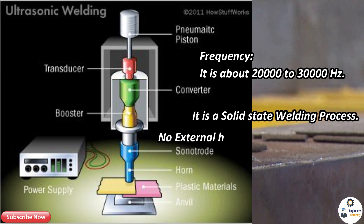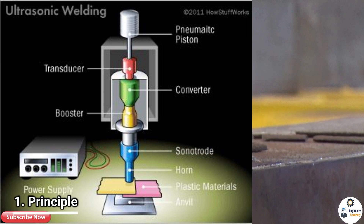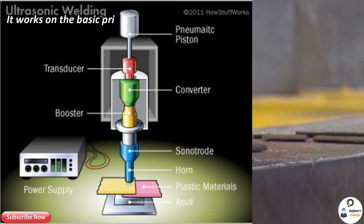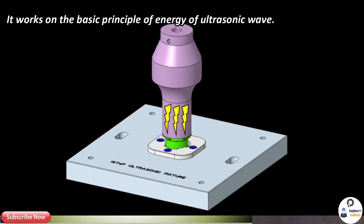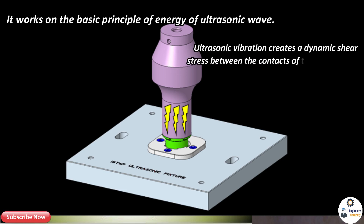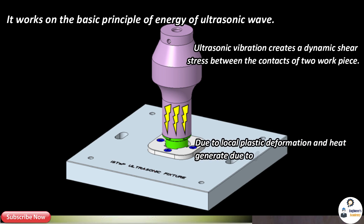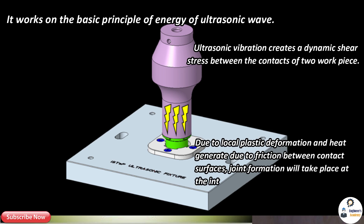Solid state welding is a welding process in which no external heat is added for welding. It works on the basic principle of energy of ultrasonic waves. Ultrasonic vibration creates a dynamic shear stress between the contacts of two workpieces. Due to local plastic deformation and heat generated due to friction between contact surfaces, joint formation takes place at the interface.